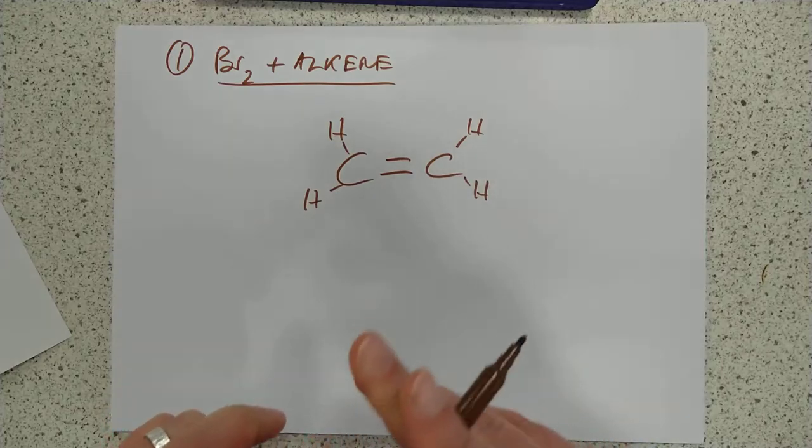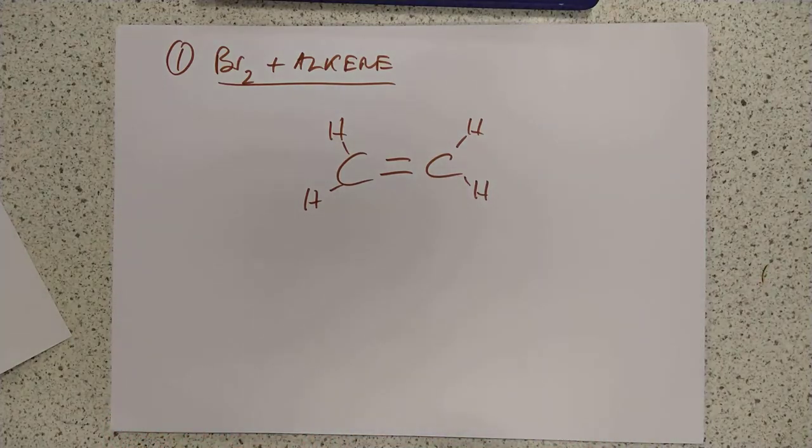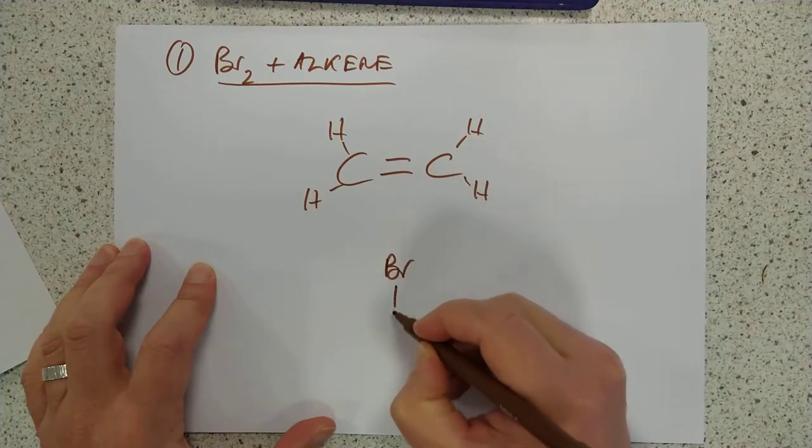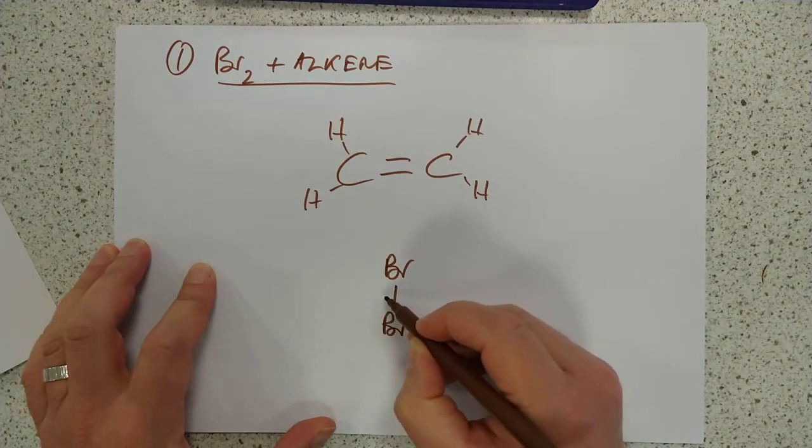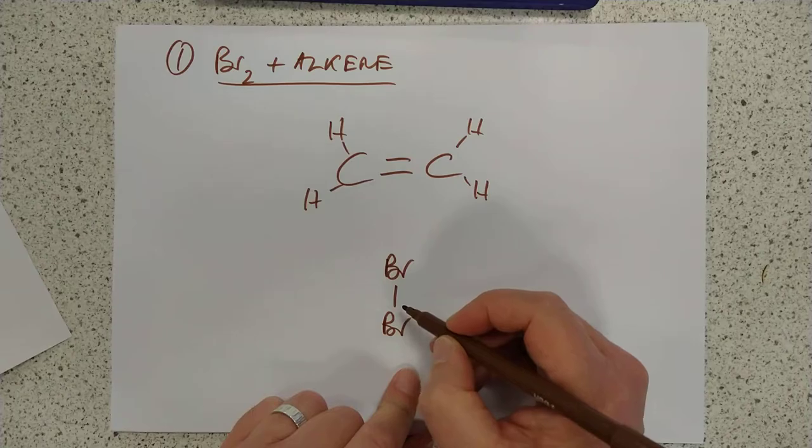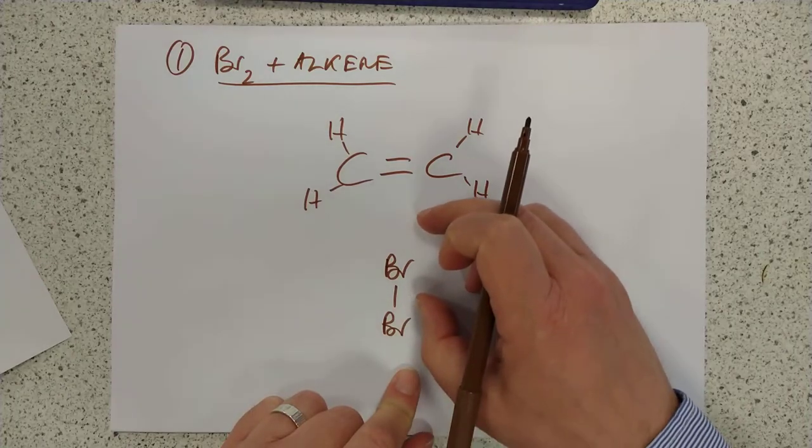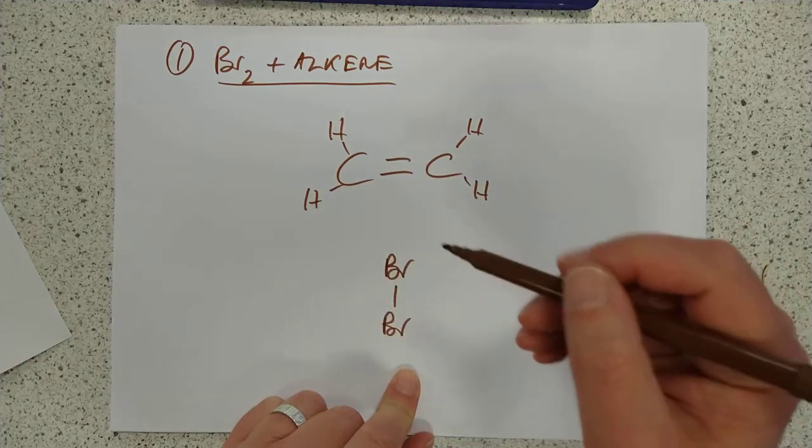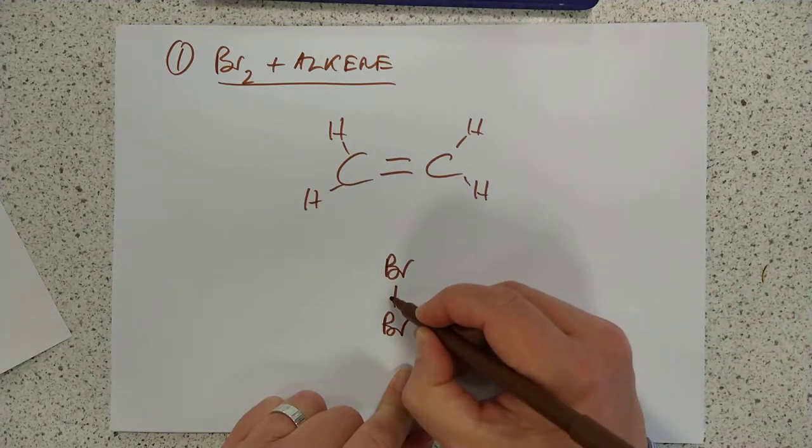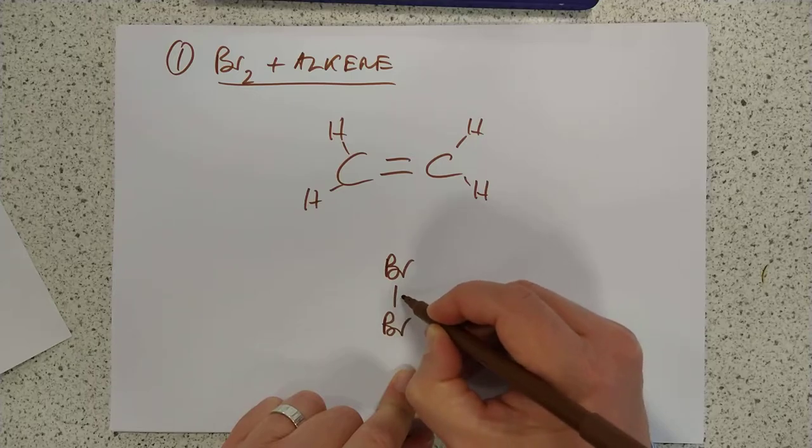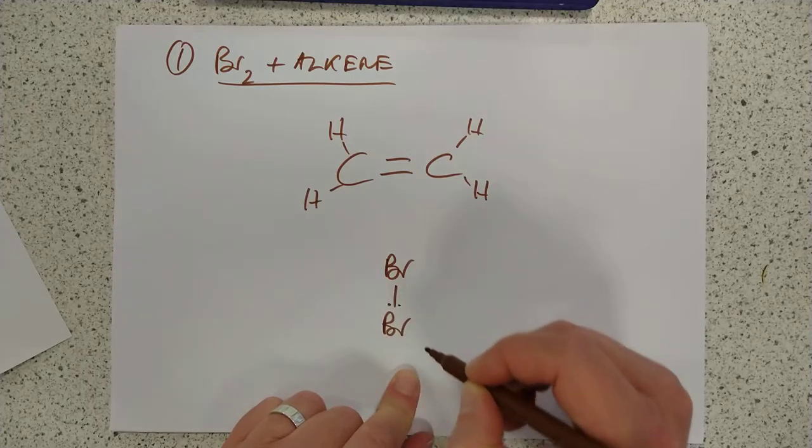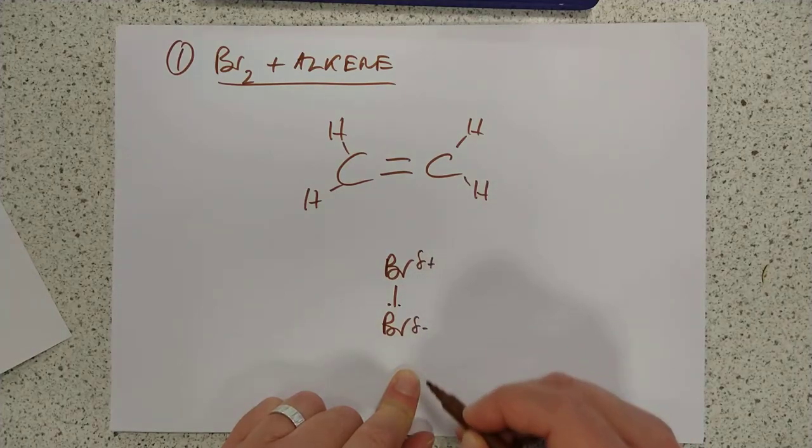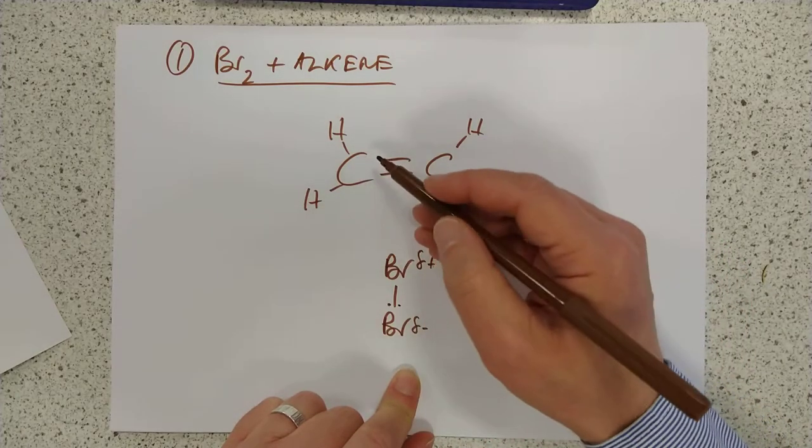It's going to be attracted to electrophiles and positively charged things. A bromine molecule is completely non-polar. But what happens is, as this approaches this big cloud of electrons, these pi bonds in space here, then this molecule becomes polarized. The pair of electrons moves down a little bit, which means this effectively becomes slightly delta plus, and this becomes slightly delta minus, caused by the presence of this double bond.